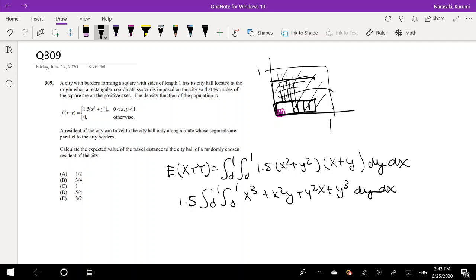So I'm integrating with respect to y, so this would just be xy. This would be x squared y over 2. This would be y cubed over 3 times x plus y to the fourth over 4. Integrating from 0 to 1 dx for the second integral.